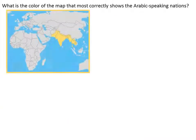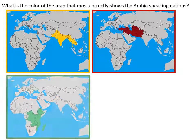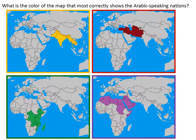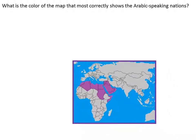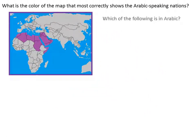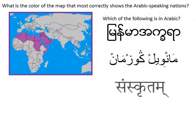What is the color of the map that most correctly shows the Arabic-speaking nations? It is, of course, the purple map. Which of the following is in Arabic? Recognize Arabic script.